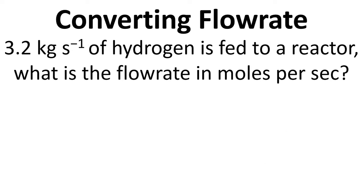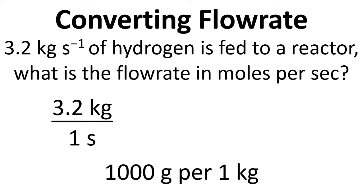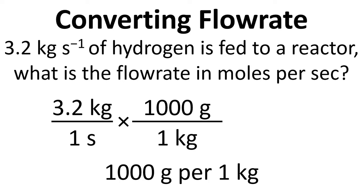Here's another example, 3.2 kilograms per second of hydrogen. What's the flow rate in moles per second? Same process, 3.2 kilograms divided by 1 second. We multiply by 1000 grams over 1 kilogram.